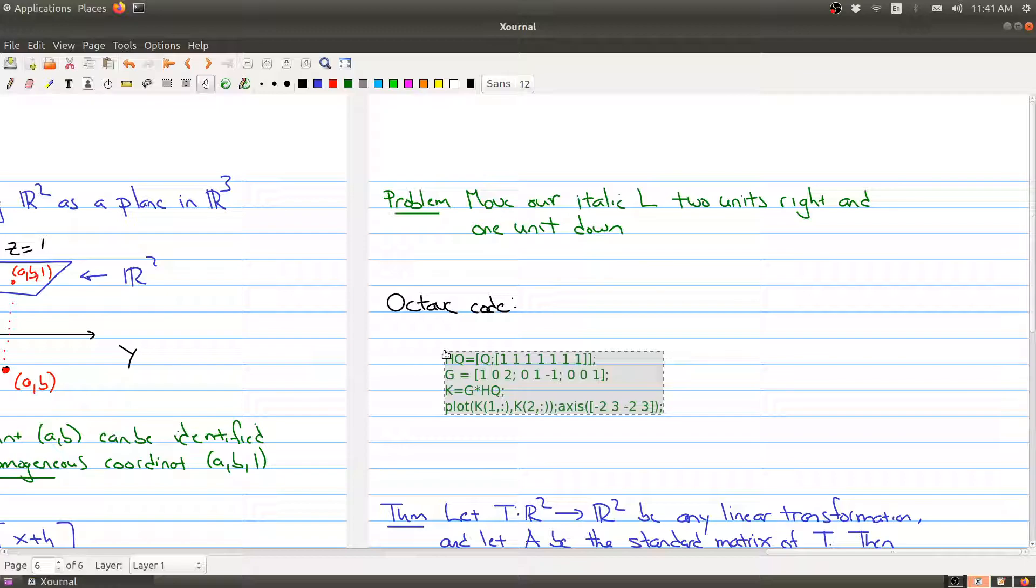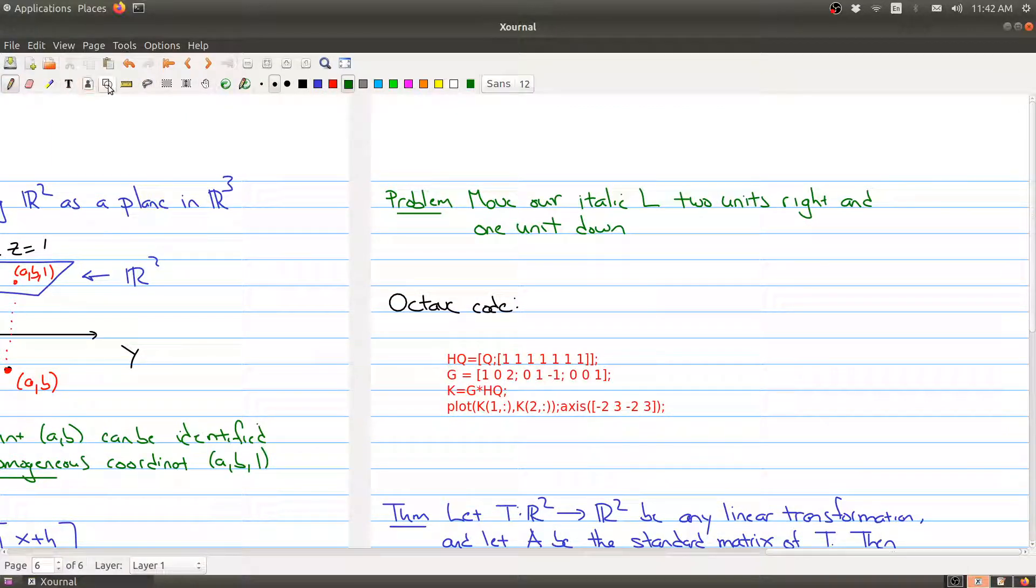So like before, I have my Octave code all here and I'll explain what this code is doing. In the first row what we've done is added a row of ones - the matrix Q is containing all the coordinates of our italic L, and we're adding a row of ones at the bottom. That is making everything the homogeneous coordinates. Then this part here is the translation matrix that follows from what we just wrote above. We're moving it two units to the right and one unit down, and then we're going to multiply by the matrix G.